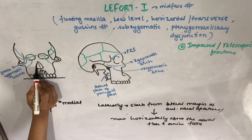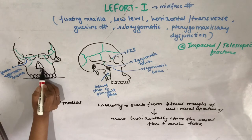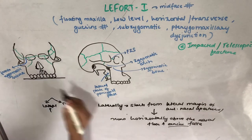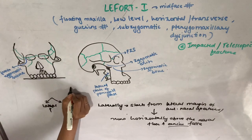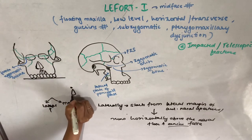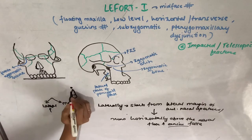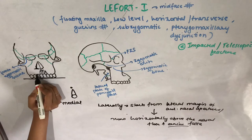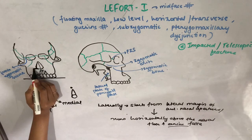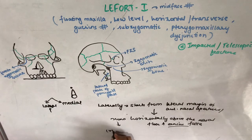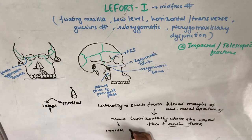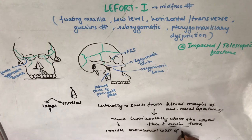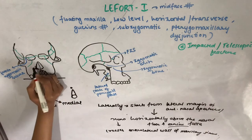The canine fossa is a depression present above the apices of the canine on the maxilla. The fracture line runs horizontally above the nasal floor and the canine fossa, then it crosses the anterolateral wall of the maxillary sinus — the wall facing facially.